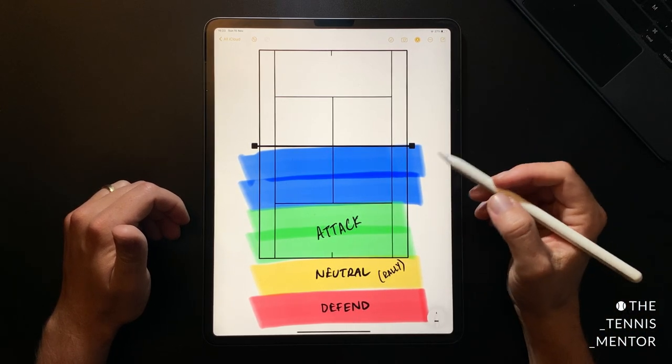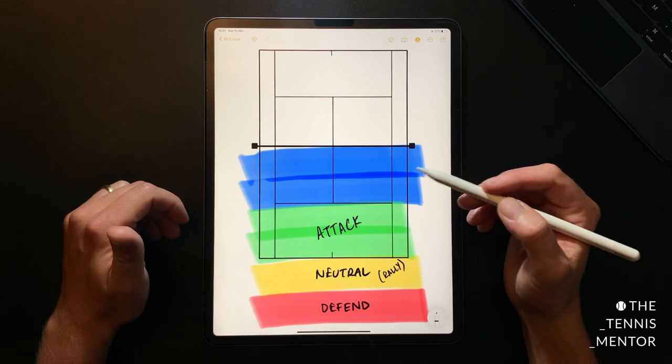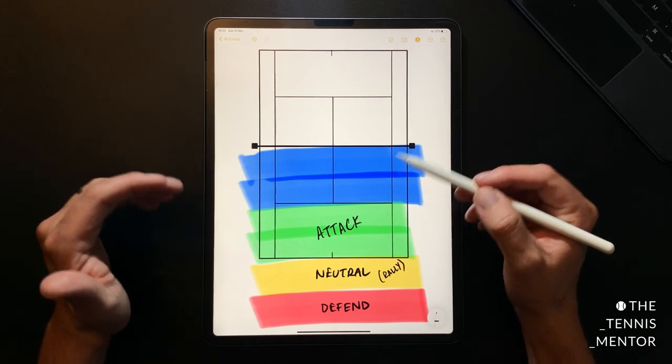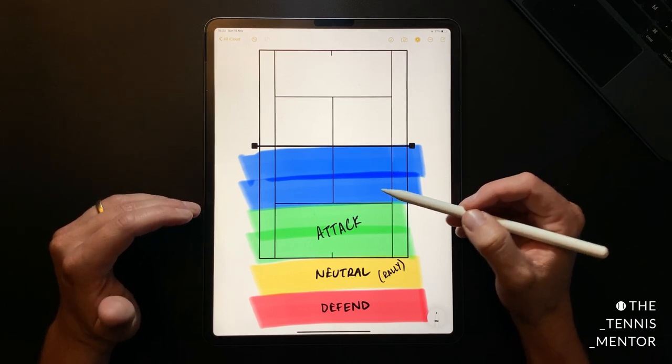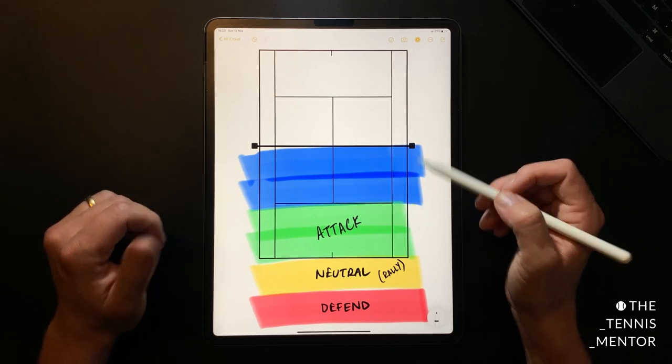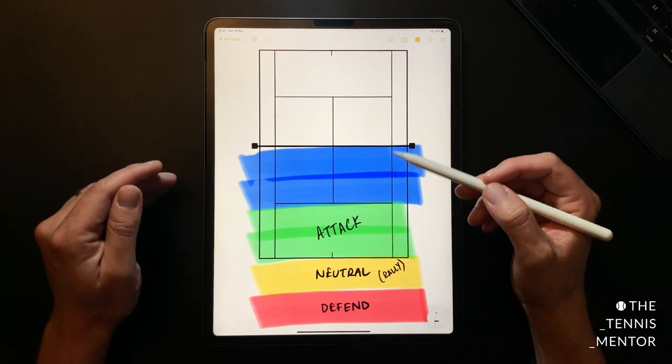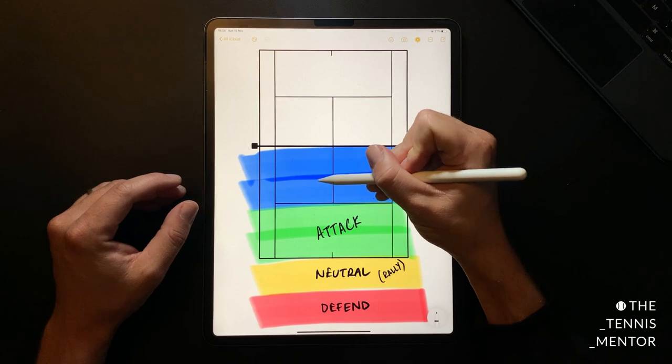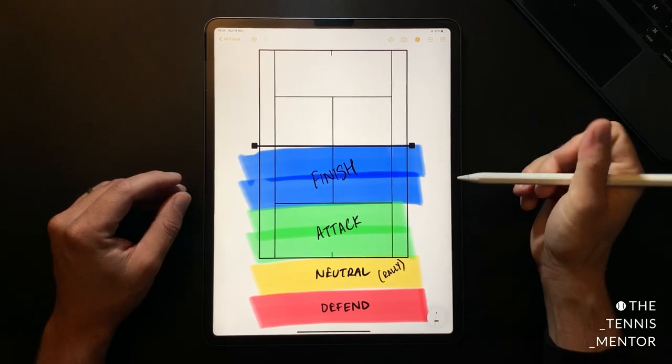Anytime you're in this green zone in the court your priority should be to apply pressure to your opponent. The pressure that you apply could be done through hitting the ball harder, it could be done by taking the ball earlier, or you can create angles as you're closer into the court. If you hit your attacking shot well you'll either win the point from that shot or give yourself an opportunity in the final zone which is the blue zone which we call the finishing zone.